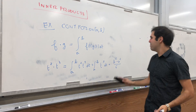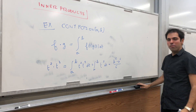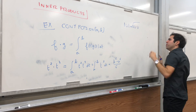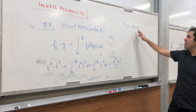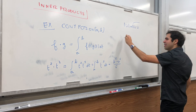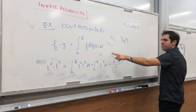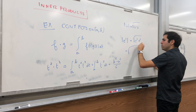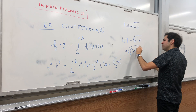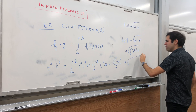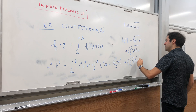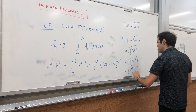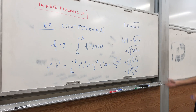Everything you've done with dot products generalizes to inner product spaces. The norm of a vector is simply √(u dot u) — this uses only the dot product axioms, so it works in any inner product space. For example, the norm of eᵗ on [a, b] is √(∫ₐᵇ eᵗ·eᵗ dt) = √(∫ₐᵇ e²ᵗ dt) = √((e²ᵇ − e²ᵃ)/2).